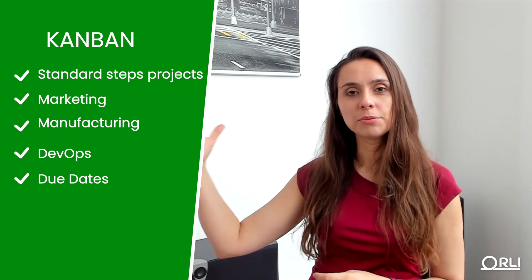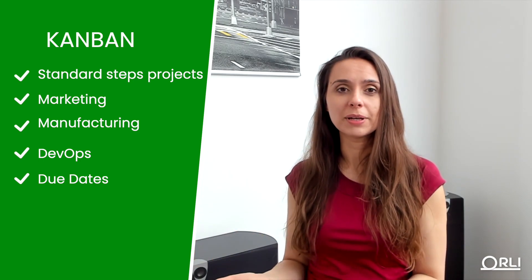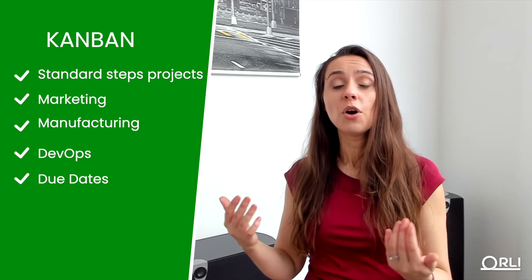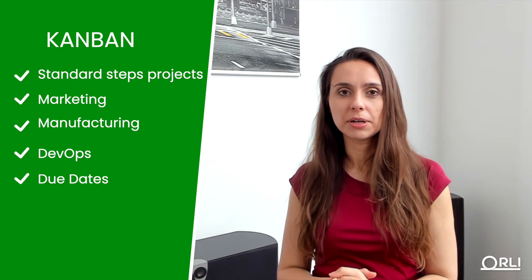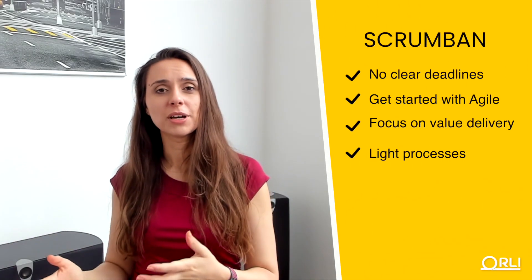Choose Kanban if your work is the same process over and over again — maintenance, marketing, manufacturing, deliveries — Kanban is the best fit. You take items one by one, deliver them by their due date, and present to stakeholders. For retrospectives, you can run them every Friday, every second Friday, or after every fifth or tenth ticket resolved — find your own balance.